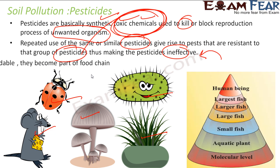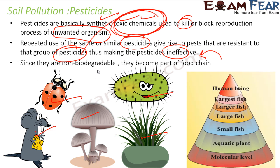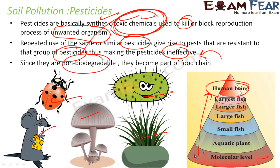soil, which is not good. Also, since pesticides are not biodegradable, they accumulate. For example, if you use pesticides to produce vegetables, fruits, or wheat, human beings also end up with a small concentration of those pesticides in their bodies.